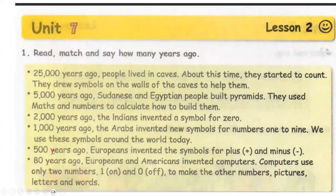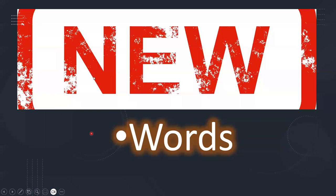We use these symbols around the world today. 500 years ago, the Europeans invented the symbols for plus and minus. 80 years ago, Europeans and Americans invented computers. Computers use only two numbers: 1 (on) and 0 (off), to make the other numbers, pictures, letters, and words.